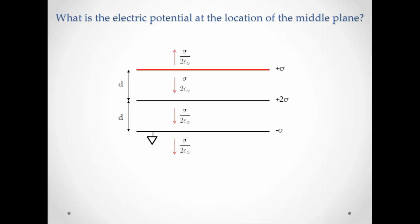Starting with the top plane, we notice that the electric field is sigma over two epsilon naught. If we're above the plane, it points upwards. And if we're below the plane, it points downwards.